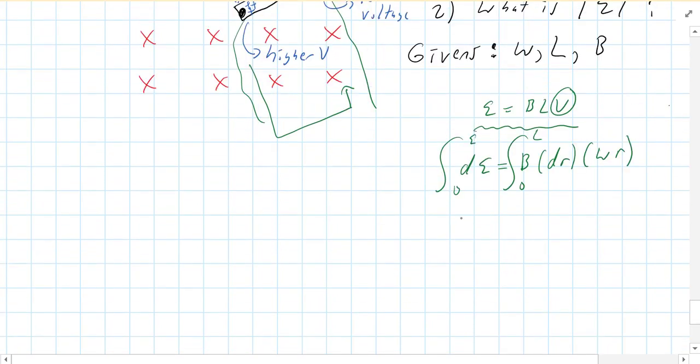So what we're integrating here is on the left side we got E. On the right side, B and omega are constants, so I'm going to pull those out. And you're integrating R dR, which is R squared over 2, and you have to evaluate that from 0 to L, and you get a fairly simple expression. You get B omega L squared over 2.